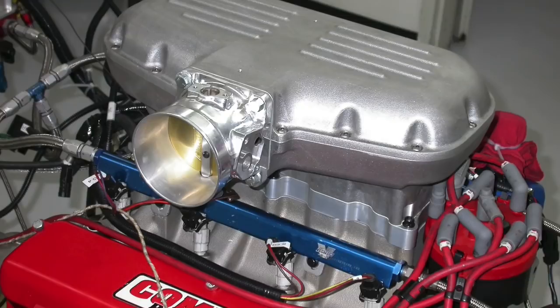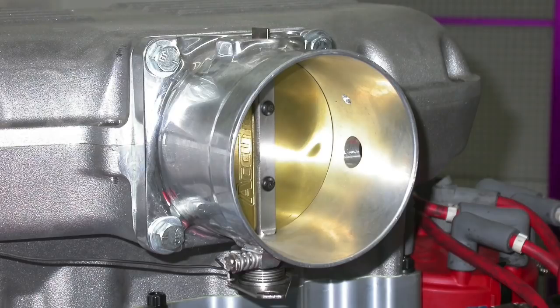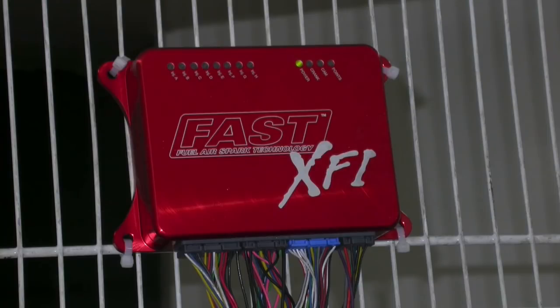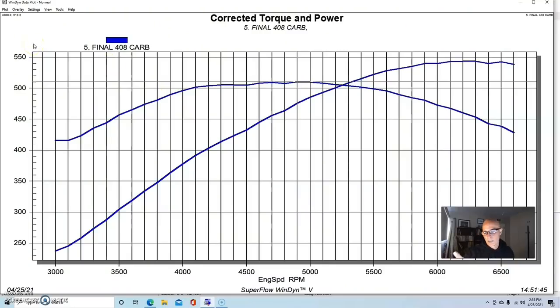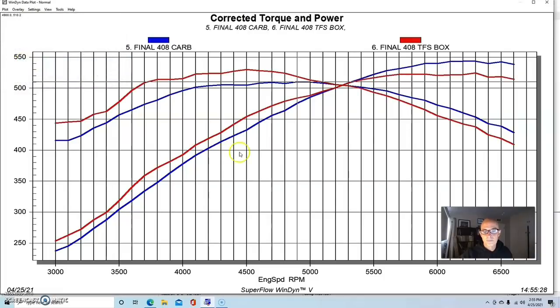But here's what happened when we installed the trick flow Box R intake manifold, the upper and lower piece. We ran this with a 90 millimeter throttle body, a set of 50 pound injectors. And like with the 331, we also dialed in the air fuel and timing using a fast XFI management system. So we only, we basically only upgraded the induction system from the carbureted combo up to EFI. And here's what happened when we installed the TFS Box R intake manifold. And I might tell you, this is more what we expected, but it is and it isn't.